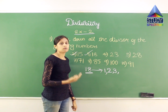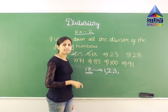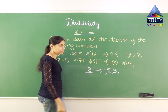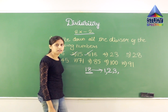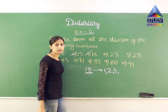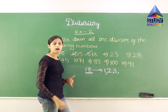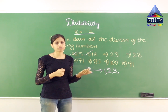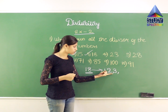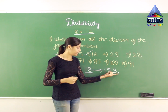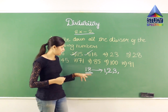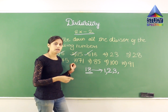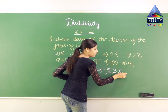Now 5: the condition for 5 to be a divisor is the number should have 0 or 5 at the end. But here I have 8, not 0 or 5. So 18 is not divisible by 5. Now 6: for 6 to be a divisor, two conditions must be met — it should have 2 as a divisor and 3 as a divisor. 18 has both 2 and 3 as divisors, so 6 is also one of the divisors of 18.